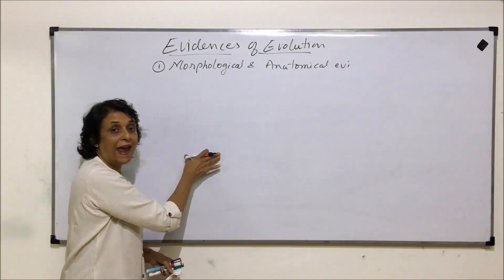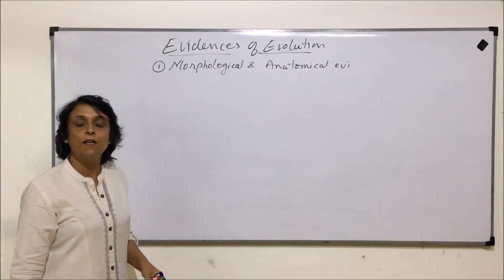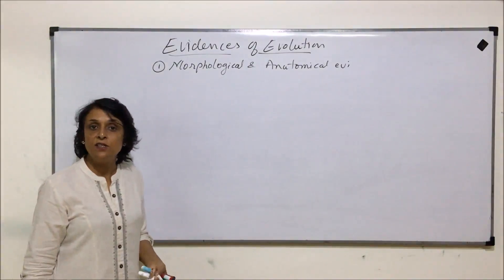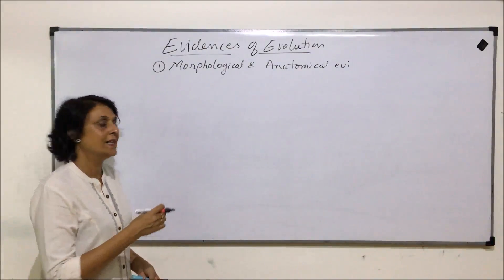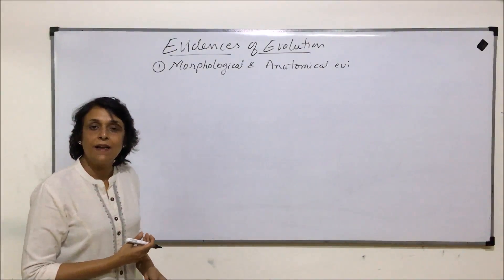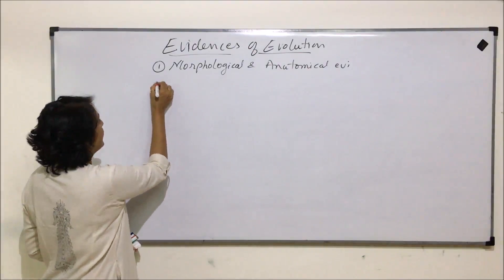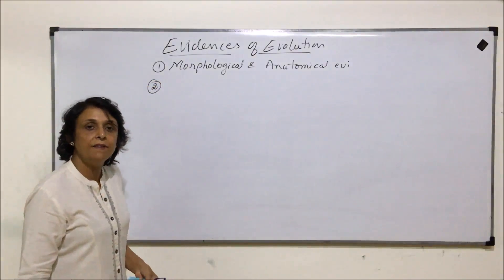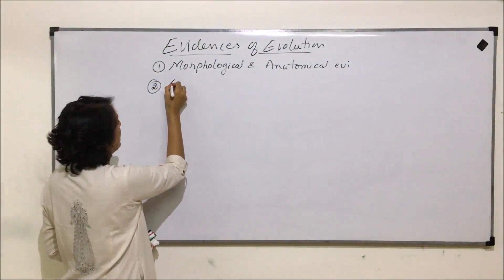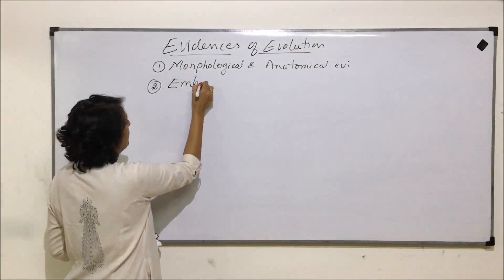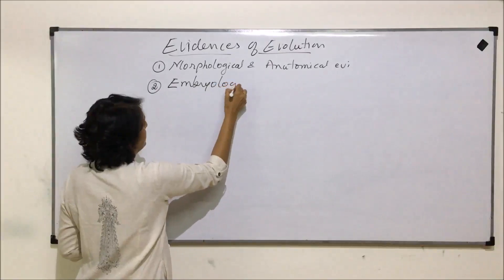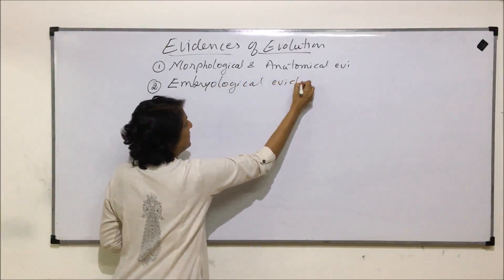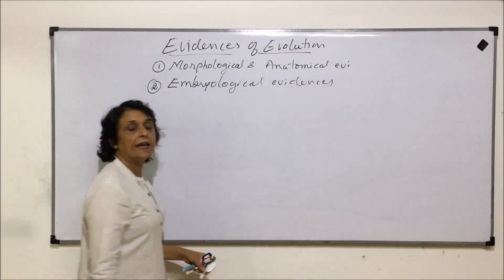Under morphological and anatomical evidences, there are further subcategories: homologous organs, analogous organs, vestigial organs, connecting links, and atavism or reversion. The second category of evolution evidences is embryological evidences.